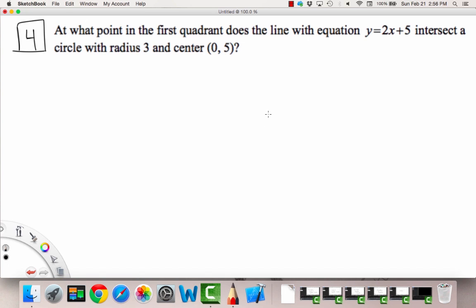Alrighty, so we've made it to the fourth and final question for this practice problems video. It asks, at what point in the first quadrant? So just a refresher here. First quadrant is this guy, this whole thing, that quadrant there. This is the second quadrant, this is the third quadrant, and this is the fourth. So we're looking for the one in the first quadrant. So that means our x is positive and y is positive.